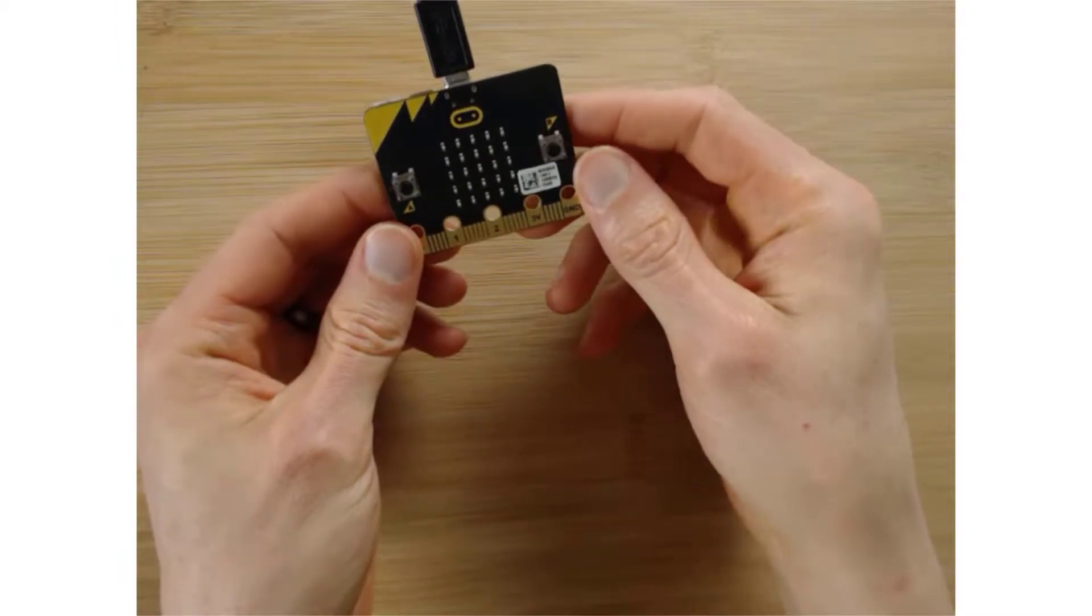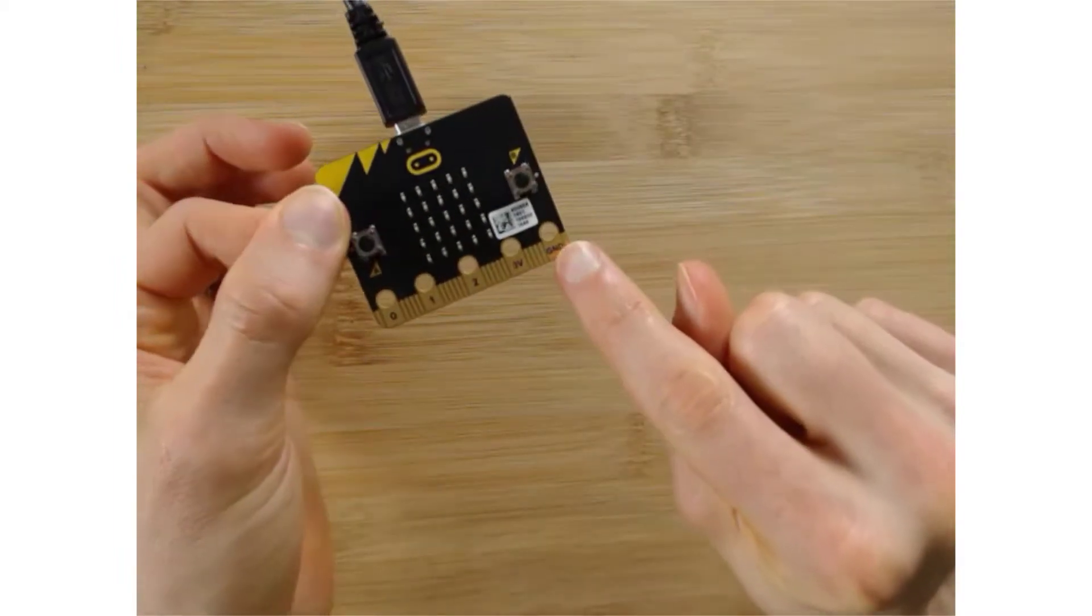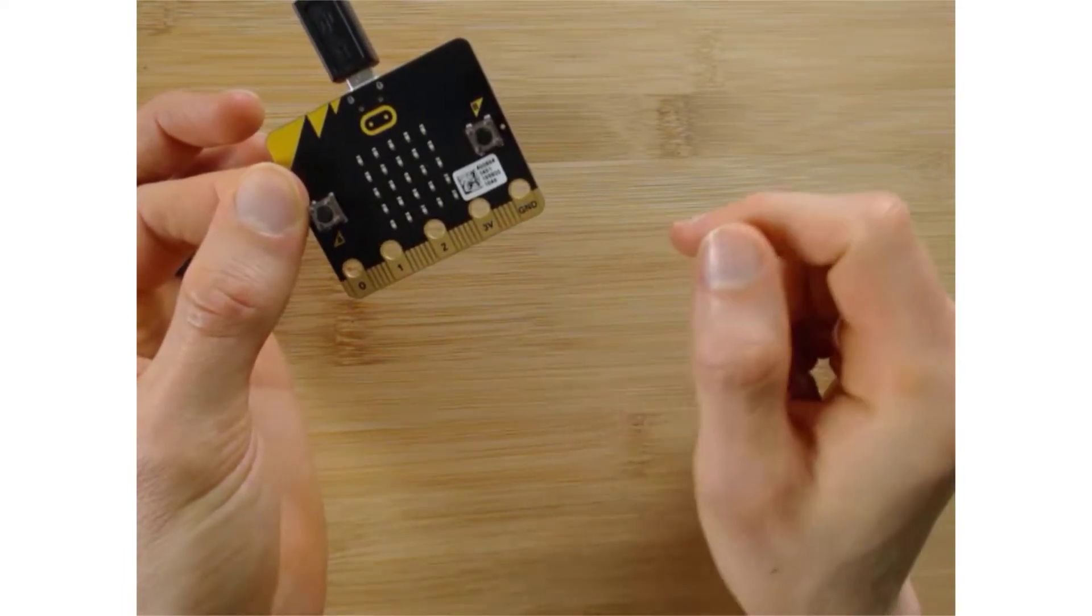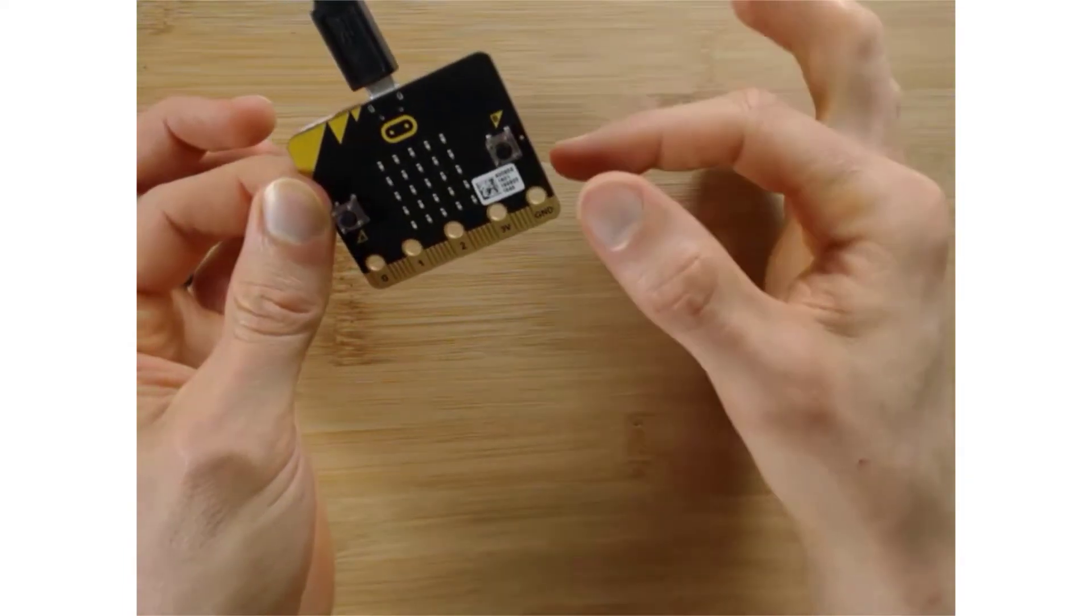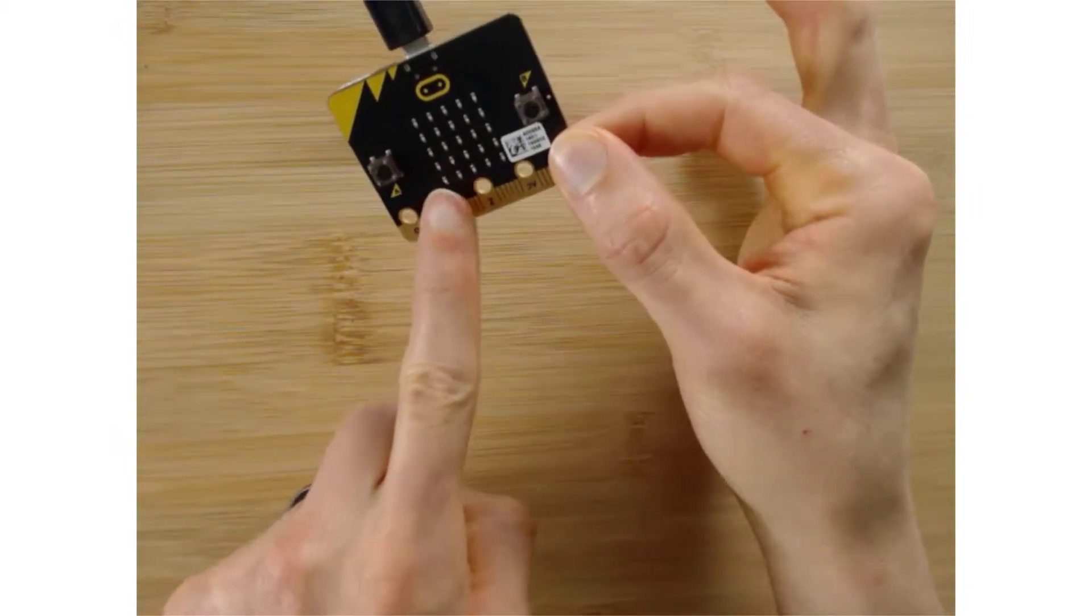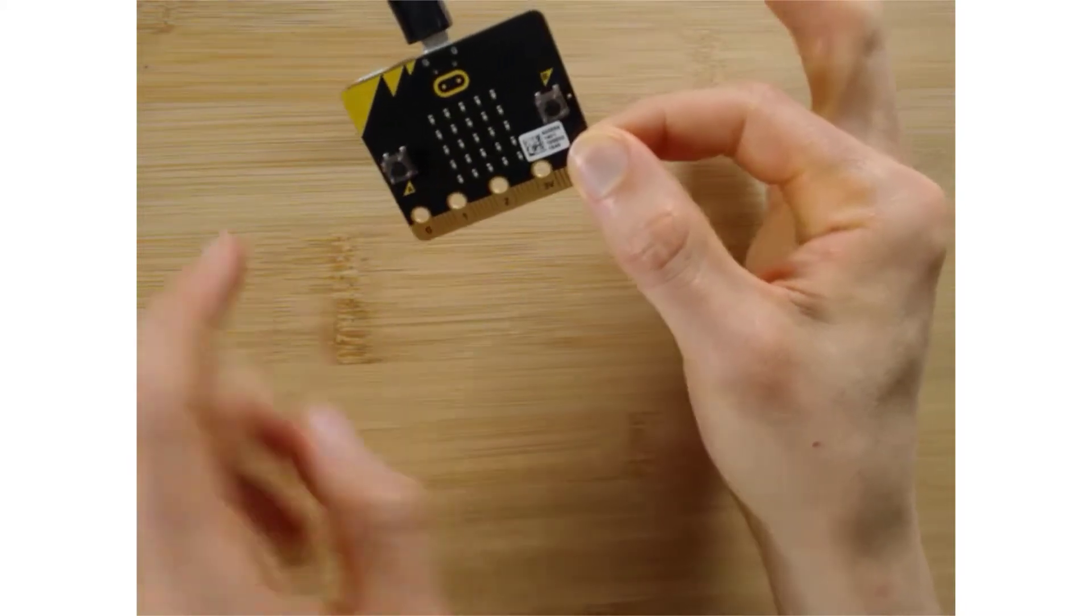All right, so we got our micro bit here. And what I want to do is I want to connect the ground, G and D, to each one of these pins so I can play the notes that are on the screen. So I could put my finger on the ground and then touch any of these and it triggers the code, which is cool.